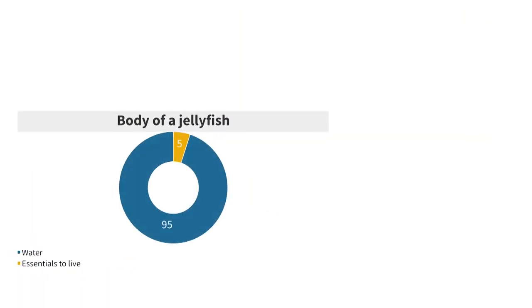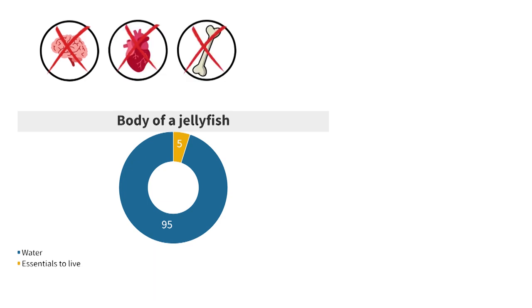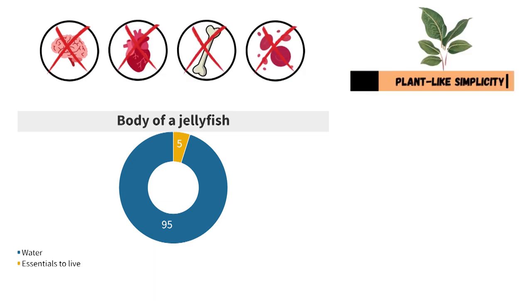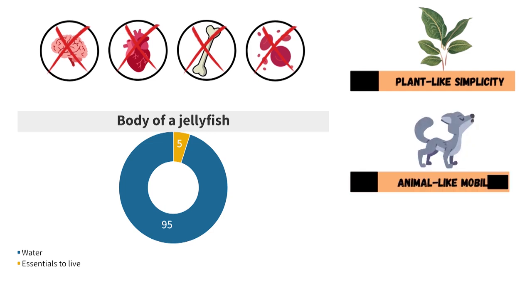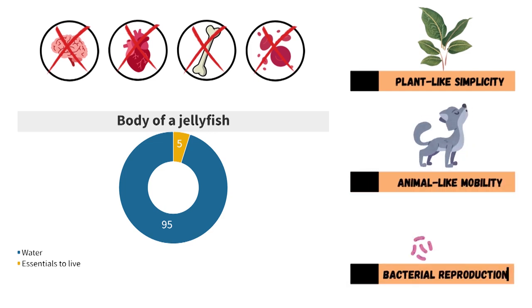Jellyfish are 95% water and only the remaining 5% contain the barest essentials they need to capture, consume and use energy. And barest essentials means that jellyfish don't have a brain and neither a heart, bones or even blood. So you could say they combine plant-like simplicity, animal-like mobility and an almost bacterial ability to reproduce rapidly under favorable conditions.